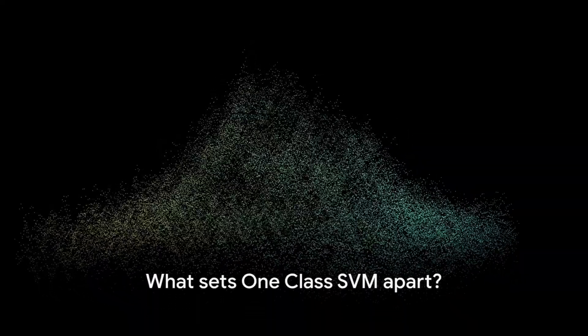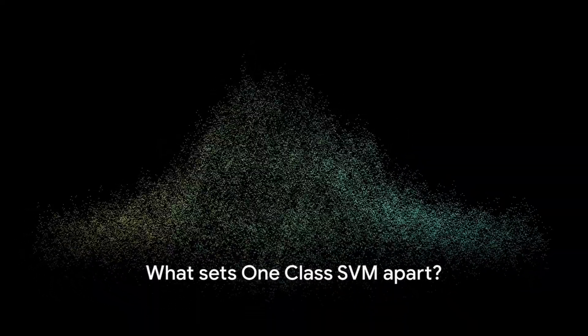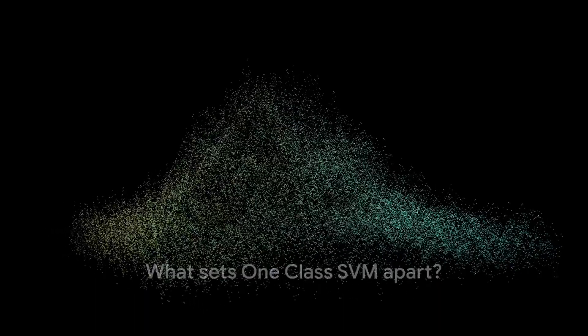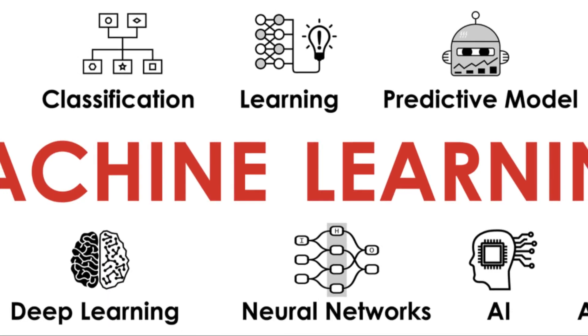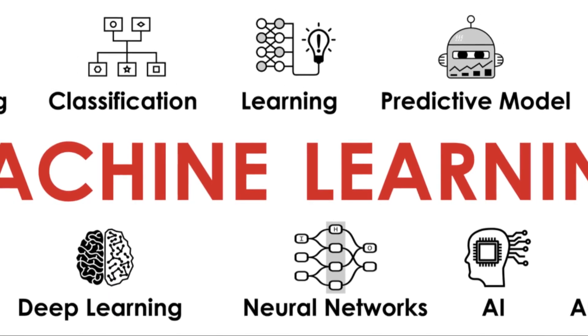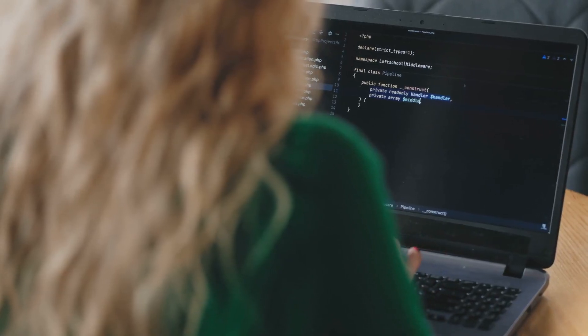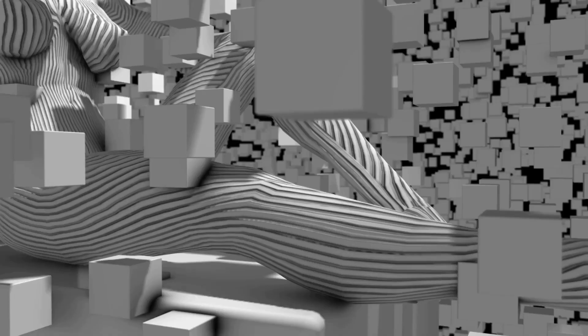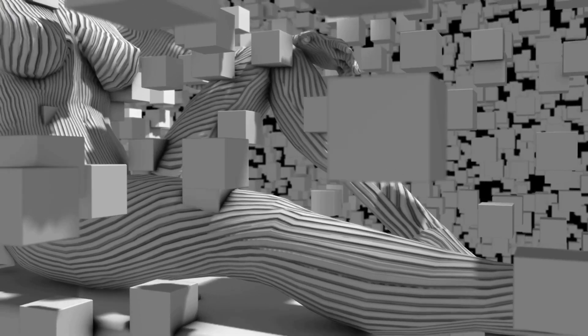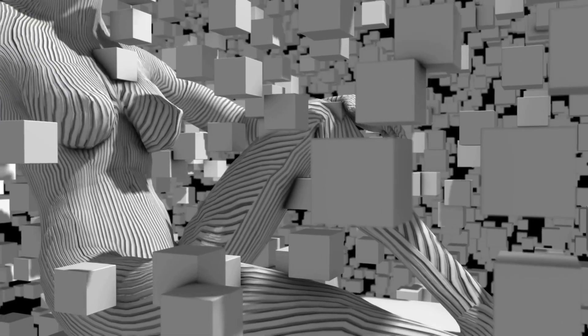To begin with, SVM, or support vector machine, is a popular algorithm used in machine learning, often used for classification and regression tasks. But what sets one-class SVM apart? It's specifically designed for novelty detection, which is the identification of new or unknown data during the testing phase.